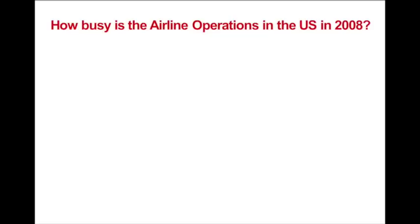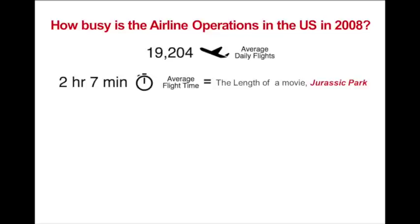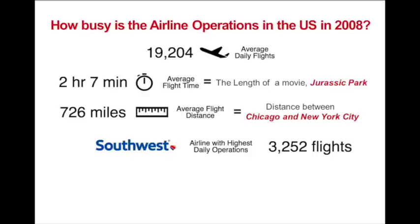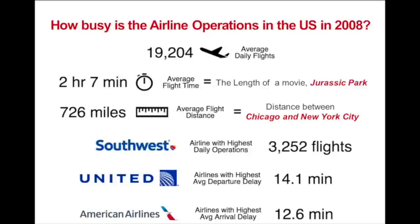How busy is airline operations in the United States in 2008? The average daily flight count is 19,000, and the average flight time is 207 minutes — equivalent to the length of Jurassic Park. The average flight distance is 726 miles, the distance between Chicago and New York City. Southwest has the highest daily operation, and United and American have the highest average departure delay and arrival delay.